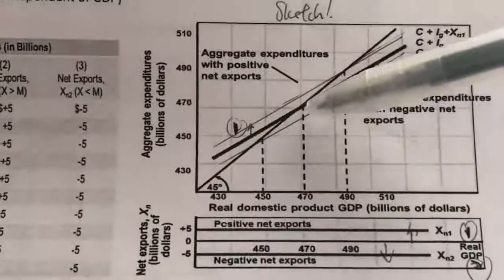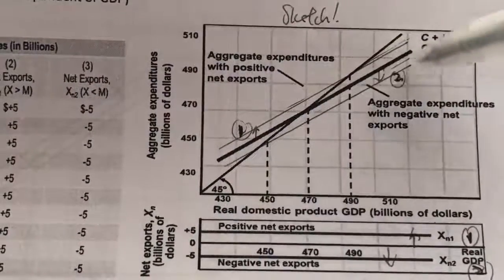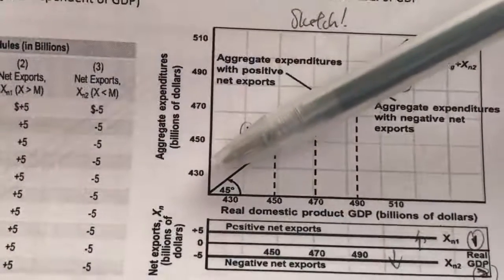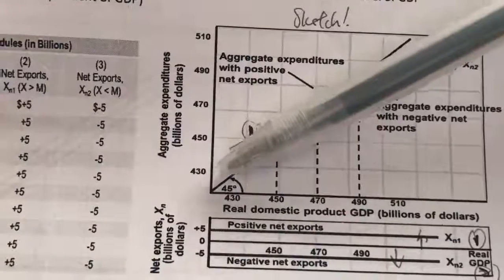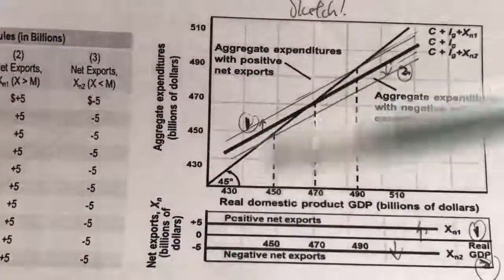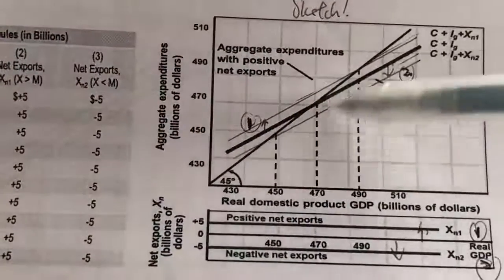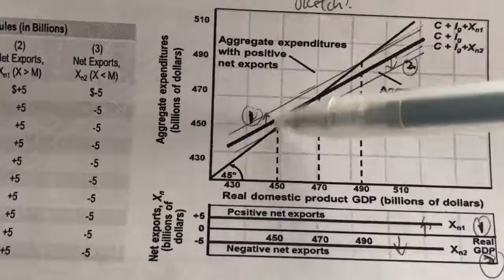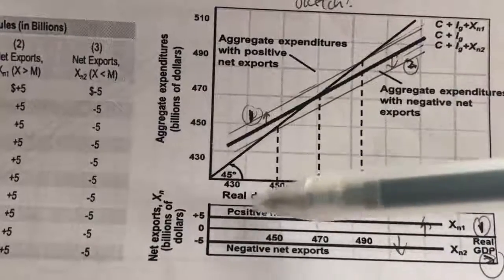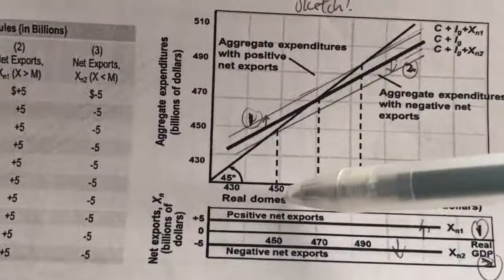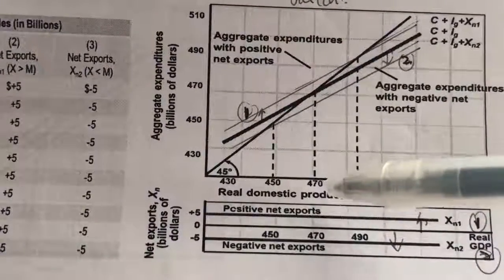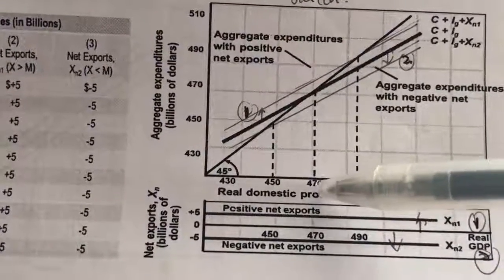Because when we have a negative XN, the whole aggregate expenditure curve falls downwards. We will have a new intersection point, giving us a new equilibrium GDP which is lower than that of the private closed economy.